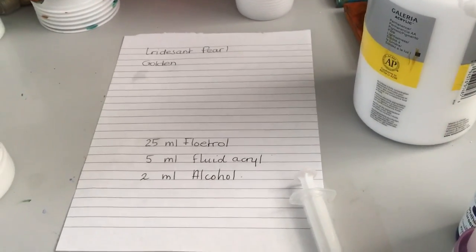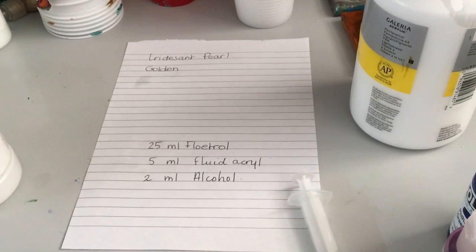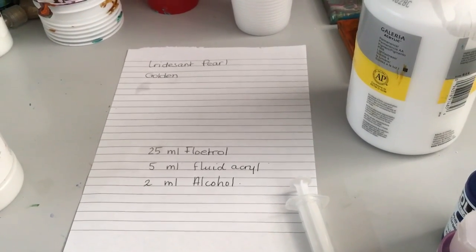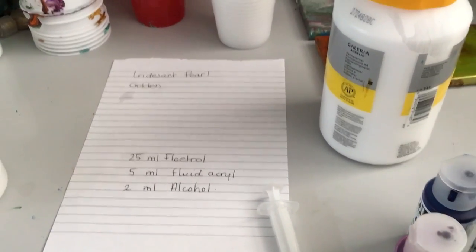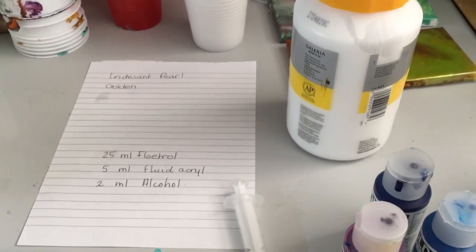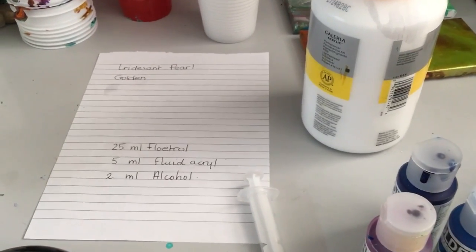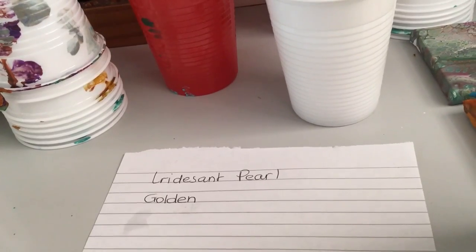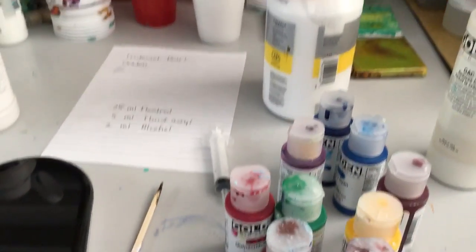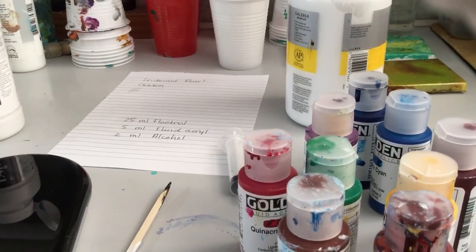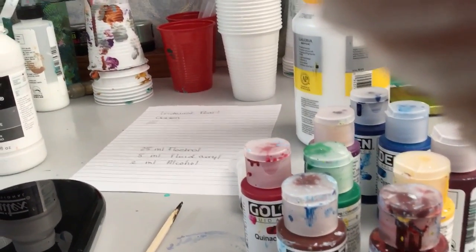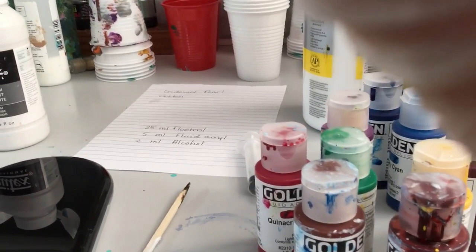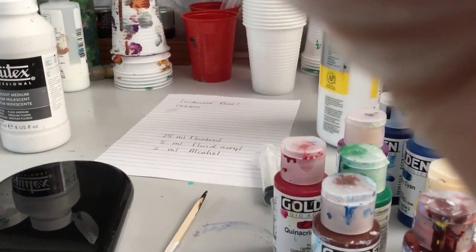That's the recipe: 25 milliliters Floetrol, 5 milliliters fluid acrylics, and then 2 milliliters alcohol. That's what I had in the colors. And then the Titan Buff, I put in a little bit more alcohol because it was a lot more paint. But he said to do that, so that's what I'm gonna buy tomorrow. If not tomorrow, Tuesday. Tuesday the shop is open, so I'll go get that. Oh boy, I just hope it dries like that because you know, this is like my first time pour.